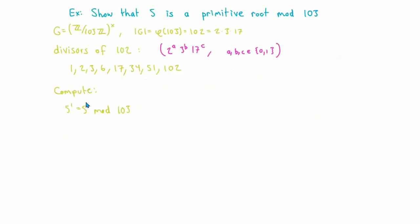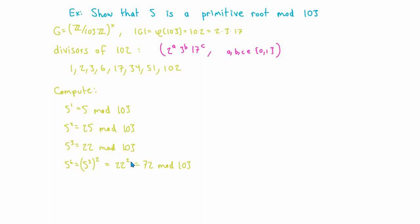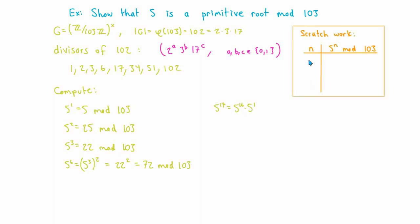Let's go through the computation. 5 to the first power is 5 modulo 103, which is not 1. 5 squared is 25. 5 cubed is 22 modulo 103. And 5 to the sixth is 5 cubed squared, which is 22 squared, which is 72 modulo 103. Notice that whenever a divisor is a multiple of one already computed, you can reuse a previous result. Next we compute 5 to the 17th power modulo 103 using the square-and-multiply algorithm. Writing 17 as 16 plus 1, we get 5 to the 17th equals 5 to the 16th times 5 to the 1st.